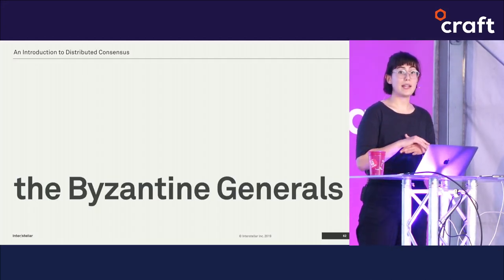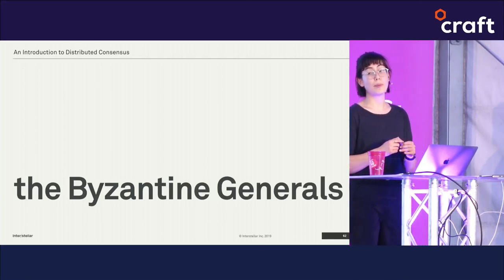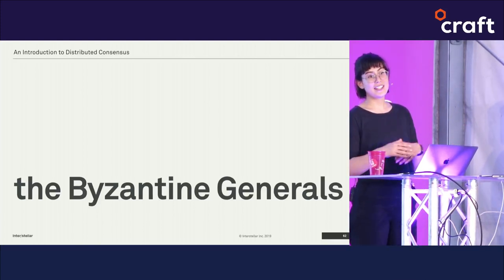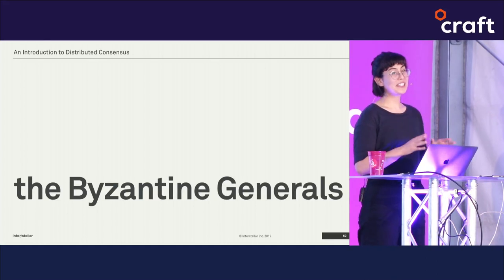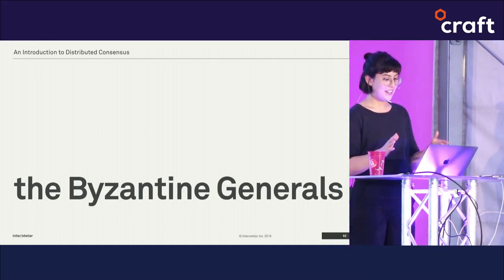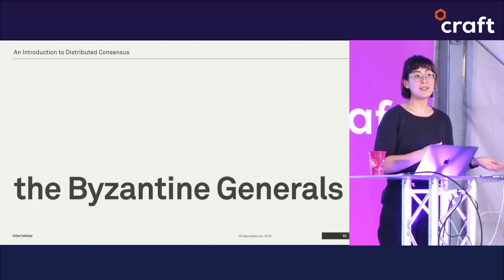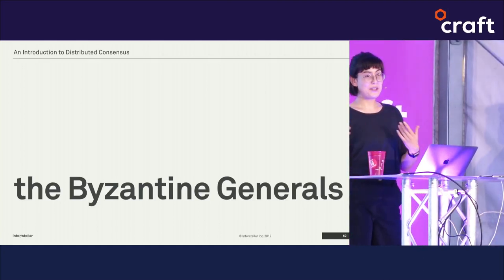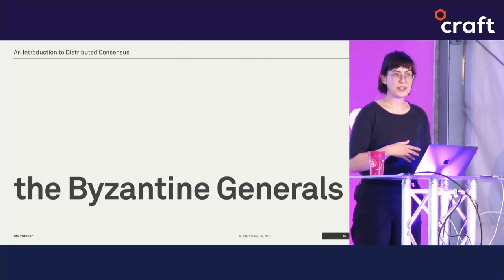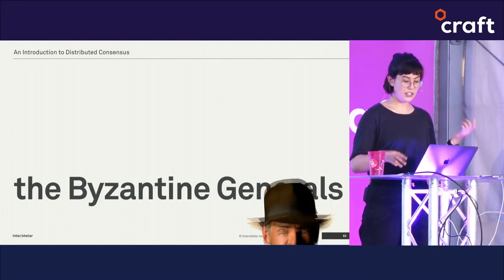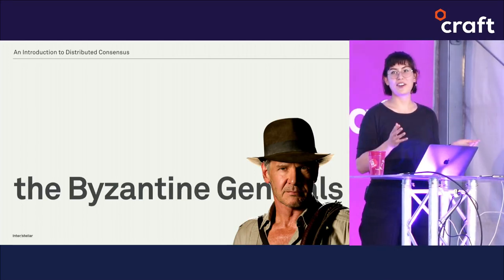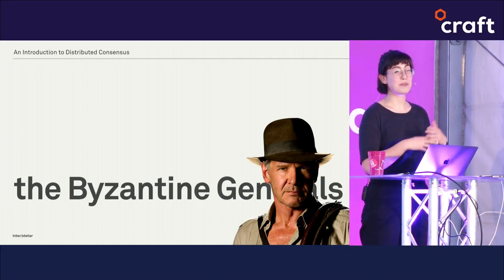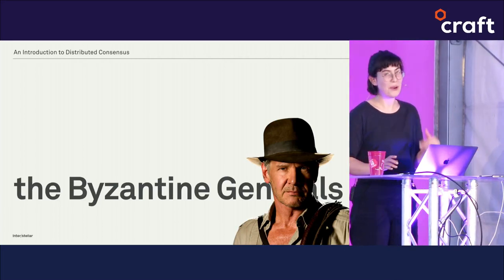Byzantine failure is named after the Byzantine generals problem, a classic computer science problem formulated as a parable. Academic computer scientists really love creating fake historical narratives to illustrate challenges in computing. For example, Paxos is named after a Greek island because its author invented an ancient Greek democracy that used the Paxos algorithm to vote — and he tried to teach it to students by dressing up like Indiana Jones and pretending he discovered this ancient society on an archaeological dig.